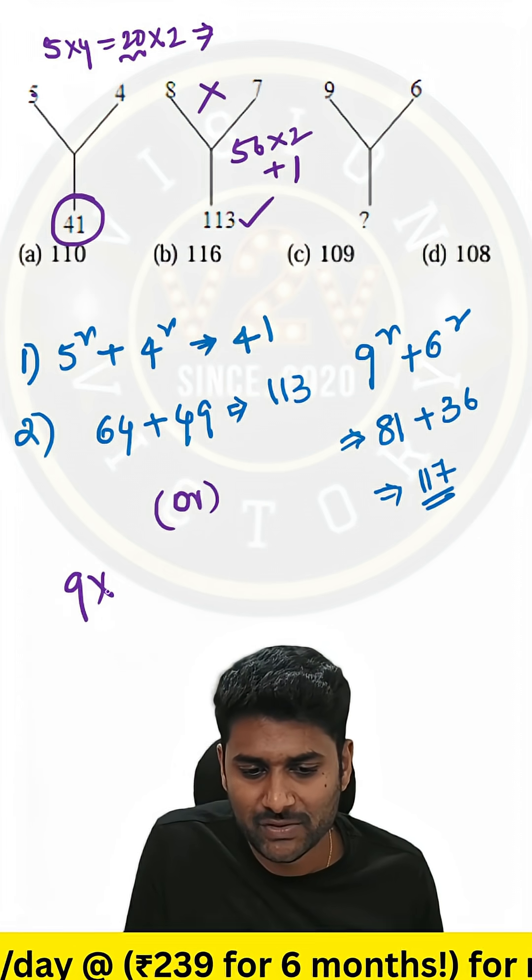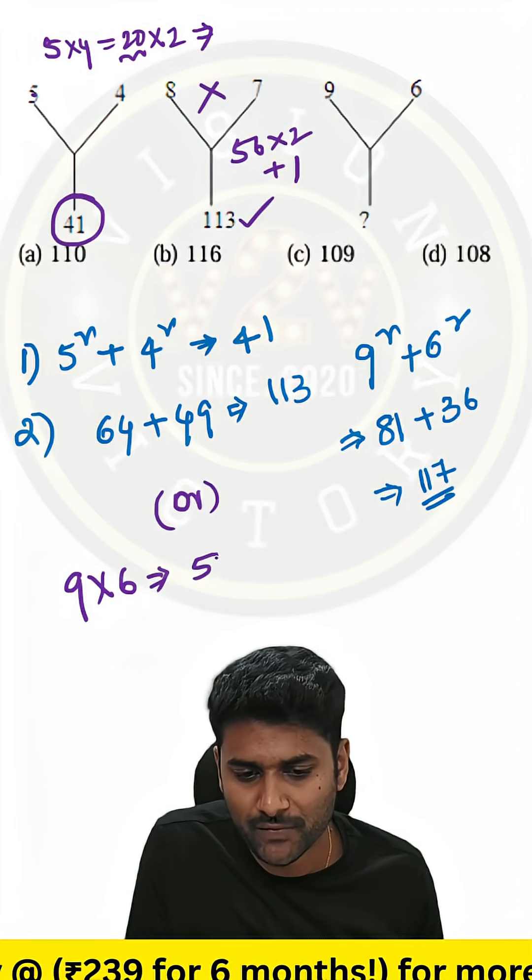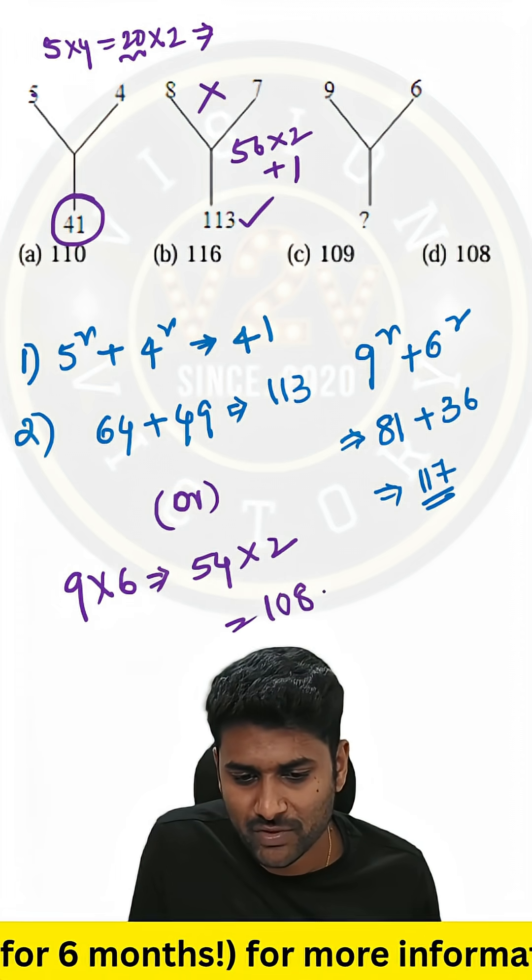Last one, 9 into 6. 9 into 6 is equal to 54. Double it, resultant is 108.